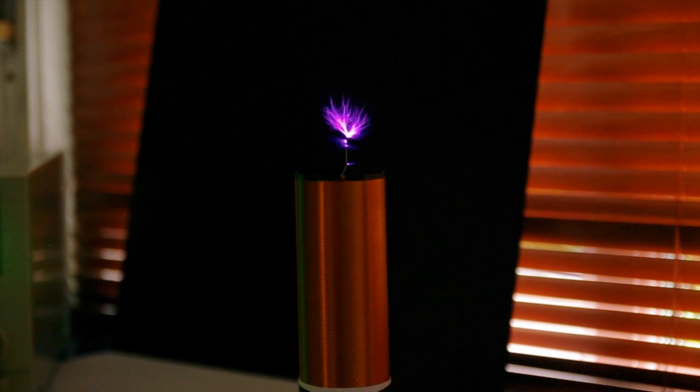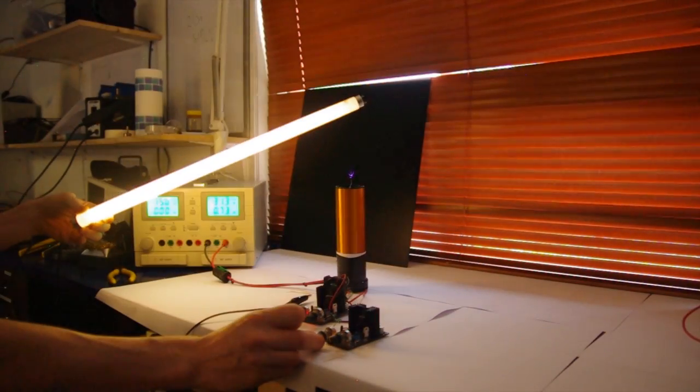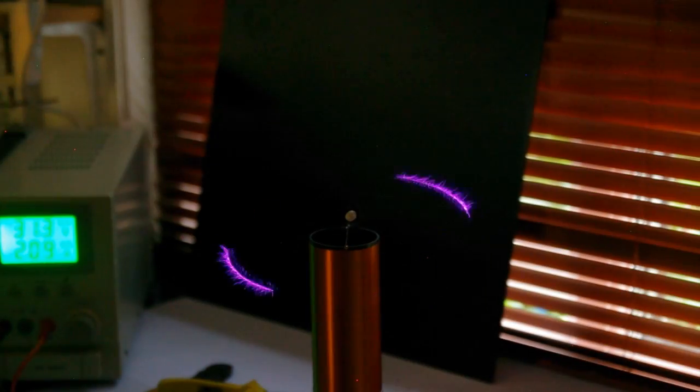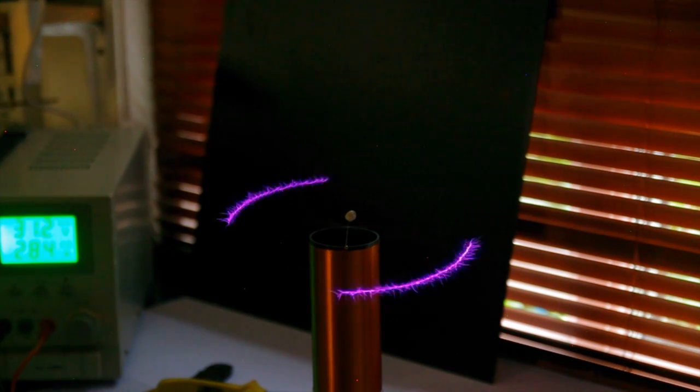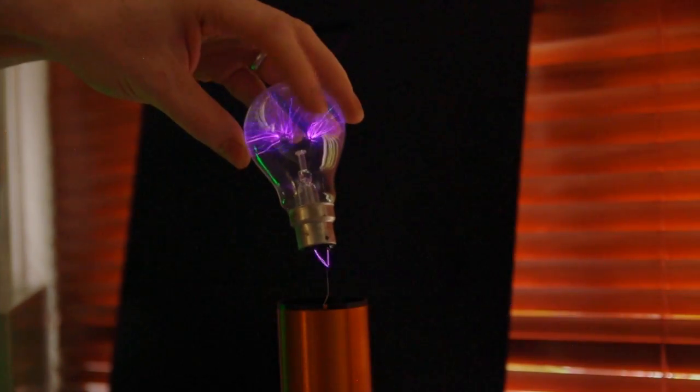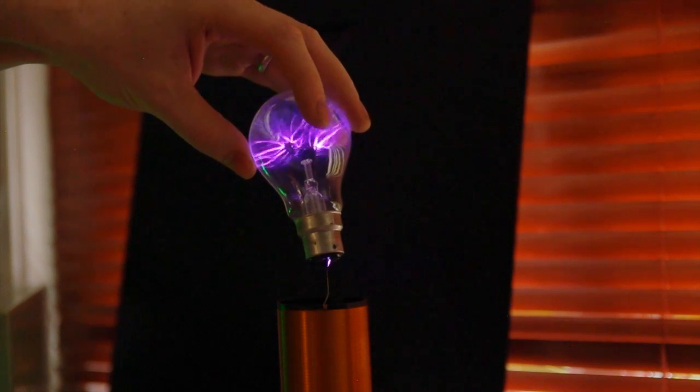A solid-state Tesla coil is a type of high-frequency resonant transformer which can step up a low DC voltage into a very high frequency AC output. In this example, the resonant frequency is in the region of 1 megahertz. The result of this high voltage, high frequency output is being able to make awesome looking sparks and arcs of plasma in the air.